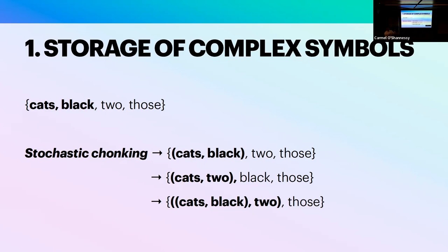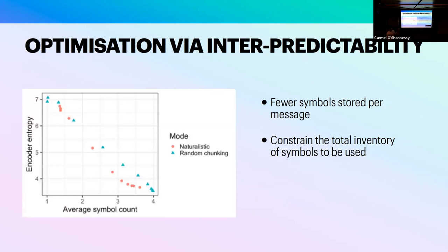The first stage involves building a storage system where you can store either simple or complex symbols — a stochastic process of symbol storage we call chunking, somewhat like psycholinguistic chunking. The system is exposed to lots of linguistic experiences and stochastically chooses to put 'cats' and 'black' together based on observing their higher mutual information. It can do this recursively, building complex symbols that themselves contain a complex symbol — so there is recursiveness in the model, but it's recursiveness in lexical storage of complex symbols, not syntactic structure. Crucially, the chunking should be driven by mutual information rather than random chunking, otherwise you get too many untargeted complex symbols stored.